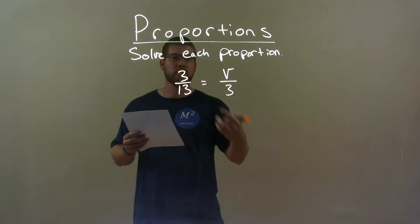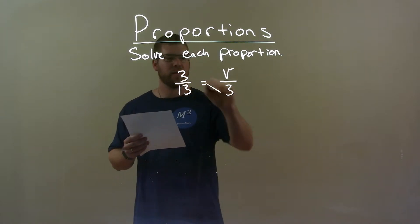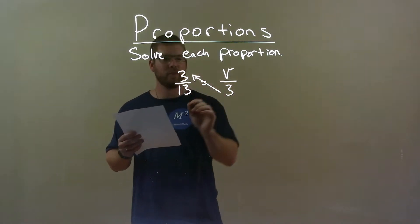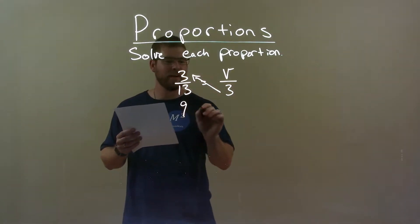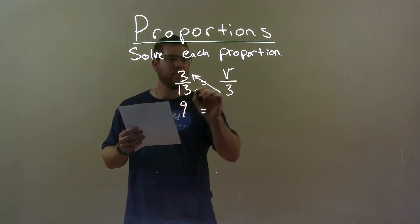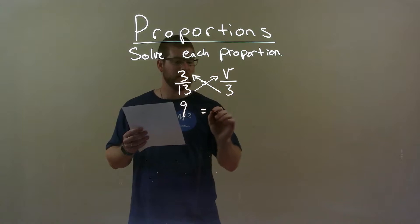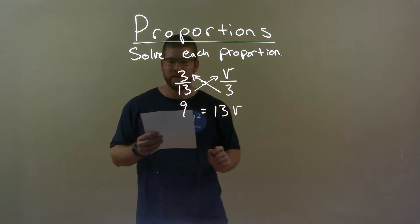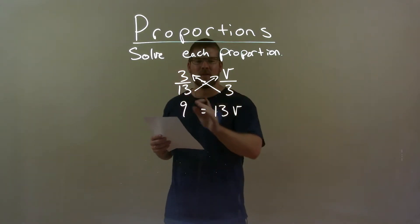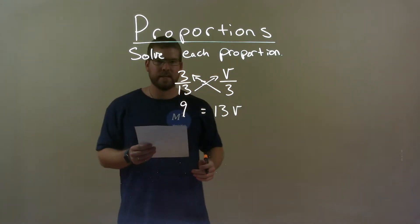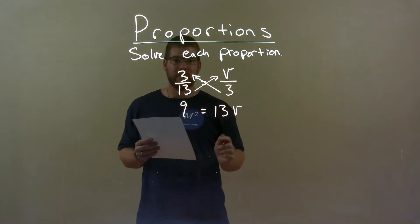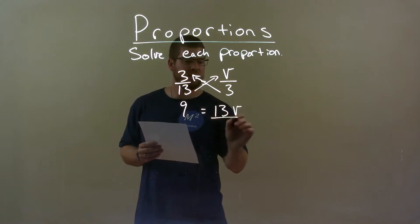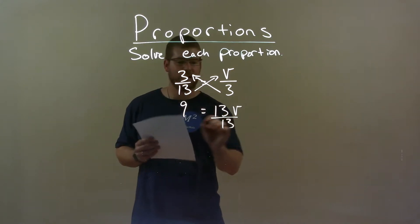First thing I want to do is cross-multiply. 3 times 3 is 9, and 13 times v is 13v. Now we have 9 equals 13v. Get v by itself — divide both sides by 13.